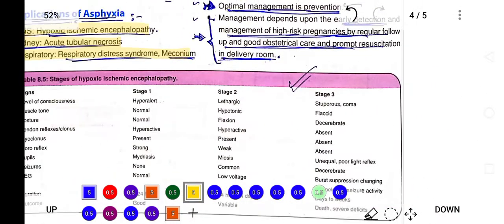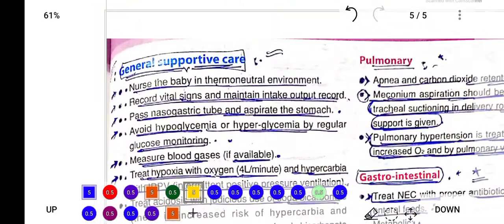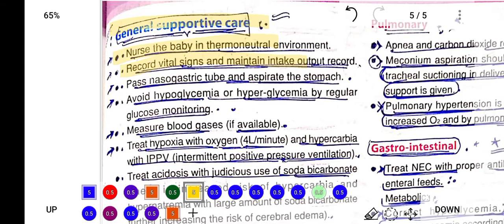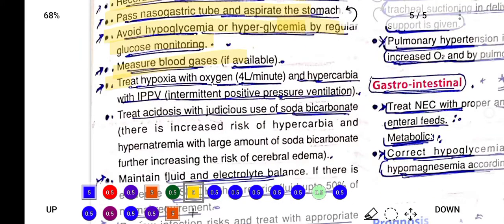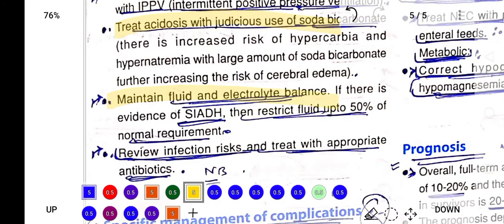The treatment will be: give general support, nurse the baby, thermoregulation should be maintained, vital signs should be recorded, NG tube should be passed, avoid hypoglycemia and hyperglycemia by regular glucose monitoring, measure blood gases, treat hypoxia, treat acidosis, maintain fluid and electrolyte balance, and review infection risk and treat with appropriate antibiotics.